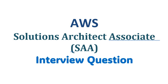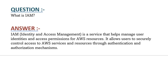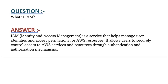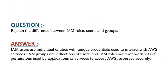Our question is, what is IAM? IAM, Identity and Access Management, is a service that helps to manage user identities and access permissions for AWS resources. It allows users to securely control access to AWS services and resources through authentication and authorization mechanisms.